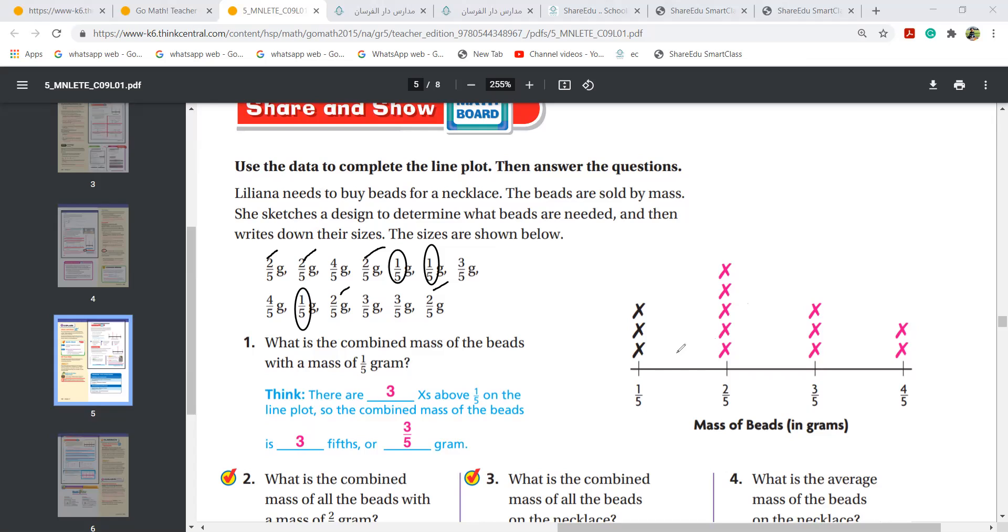Put this way in your textbook, girls. Then how many 3 over 5 do you have? 1, 2, 3 again. I put 3 crosses. And then I have 4 over 5, there are 2. I put 2 crosses. Till here, did everyone get it? Did everyone understand till here?